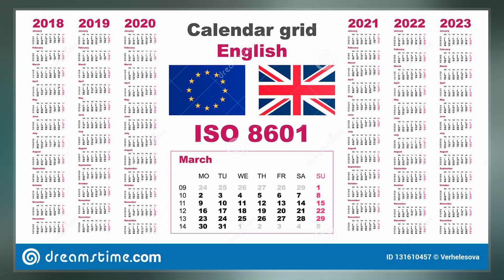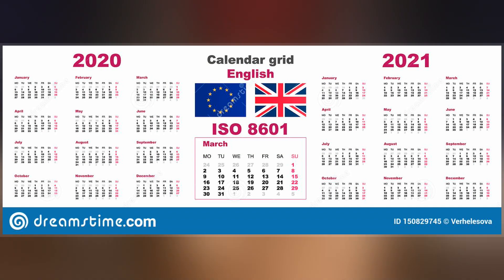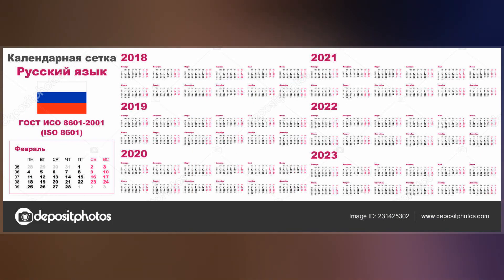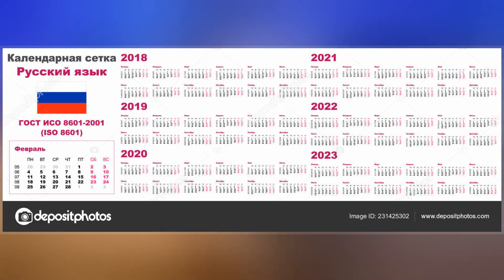The standard does not assign any specific meaning to elements of the date-time to be represented. The meaning will depend on the context of its use. In addition, dates and times to be represented cannot include words with no specified numerical meaning in the standard or that do not use characters.